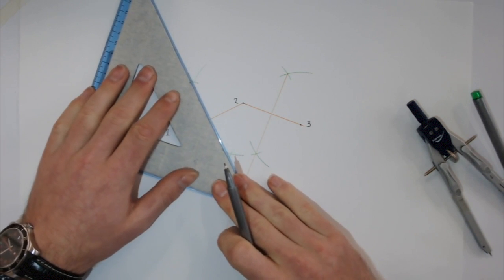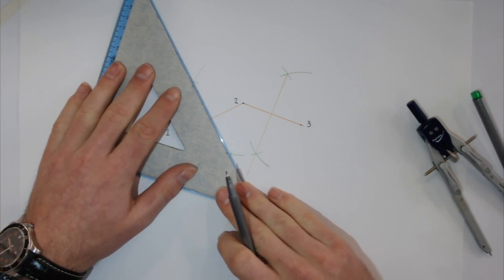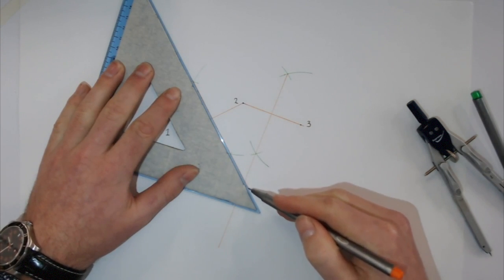When I connect up the two intersection points, I'll bring it through the center of the line and then onwards.